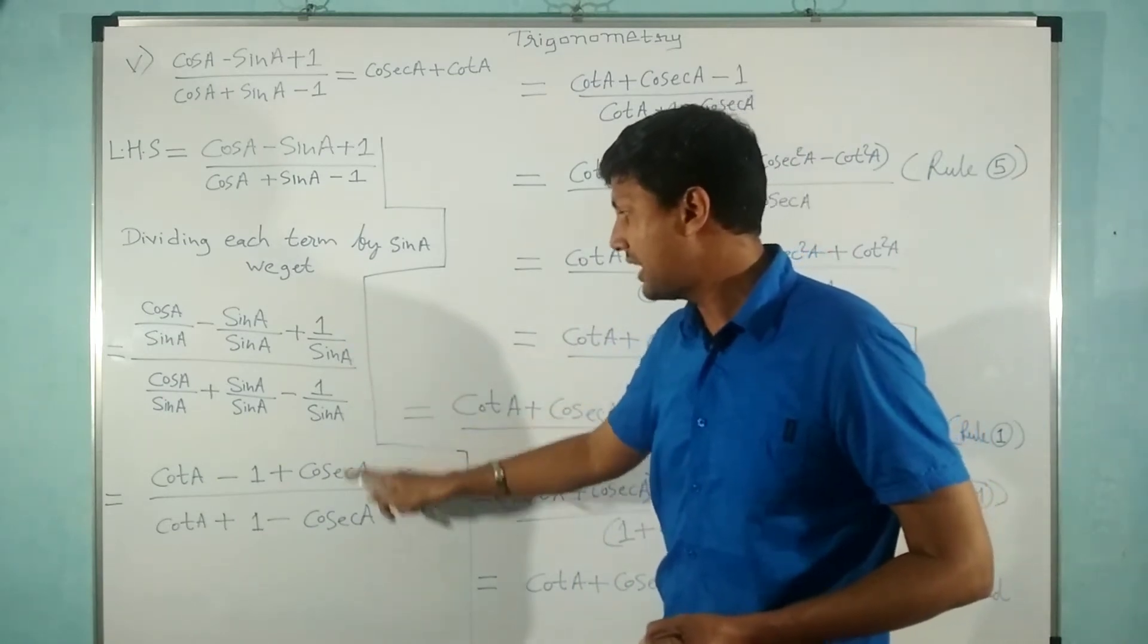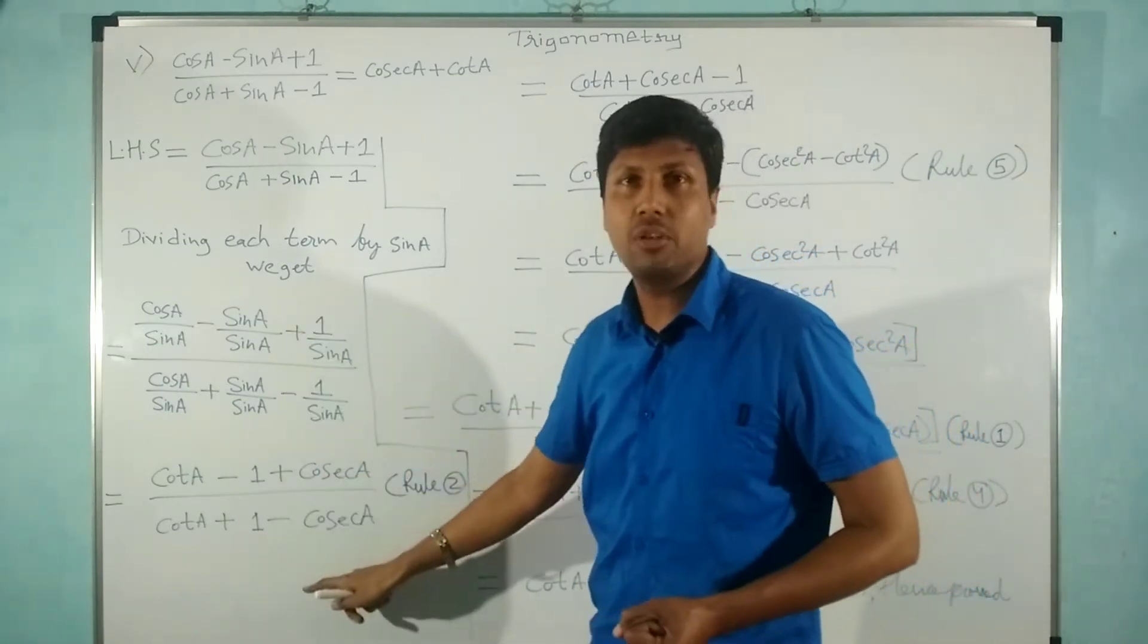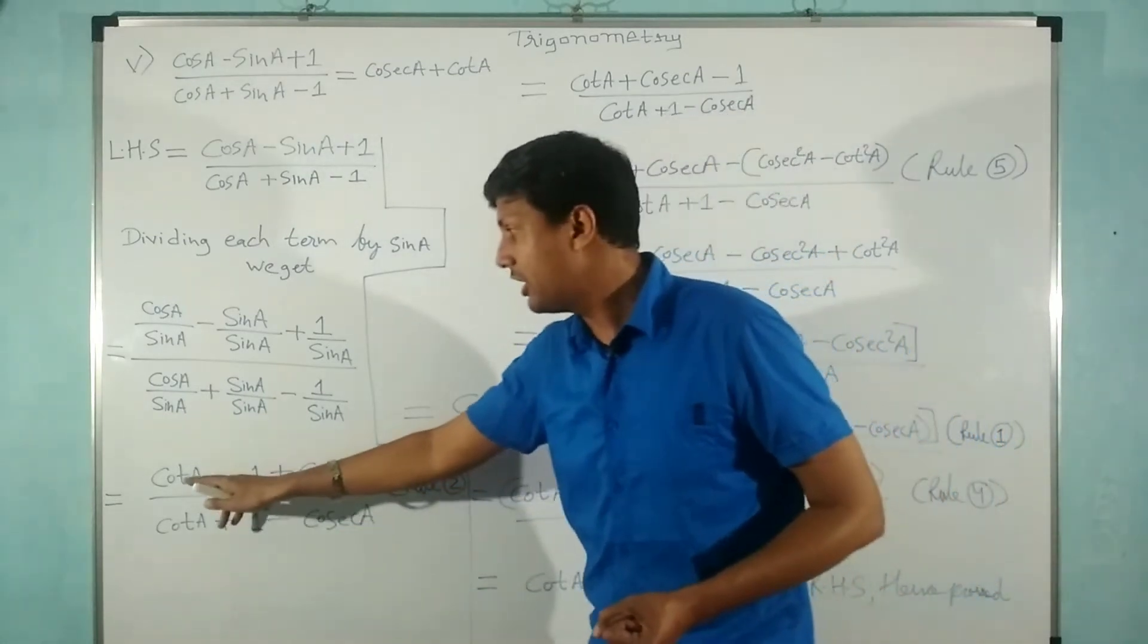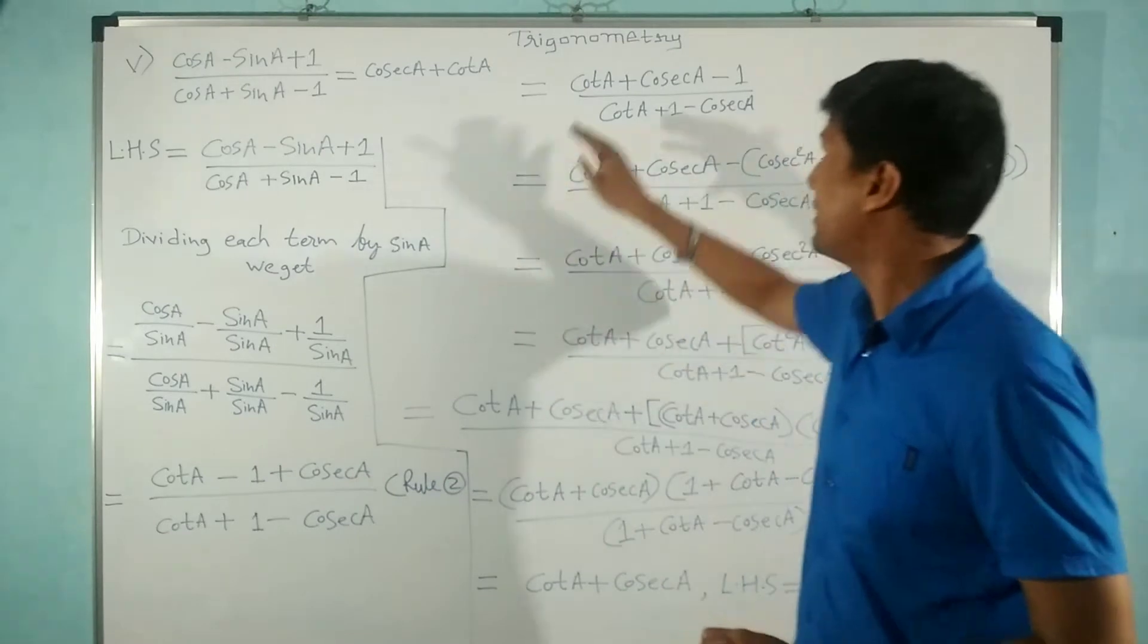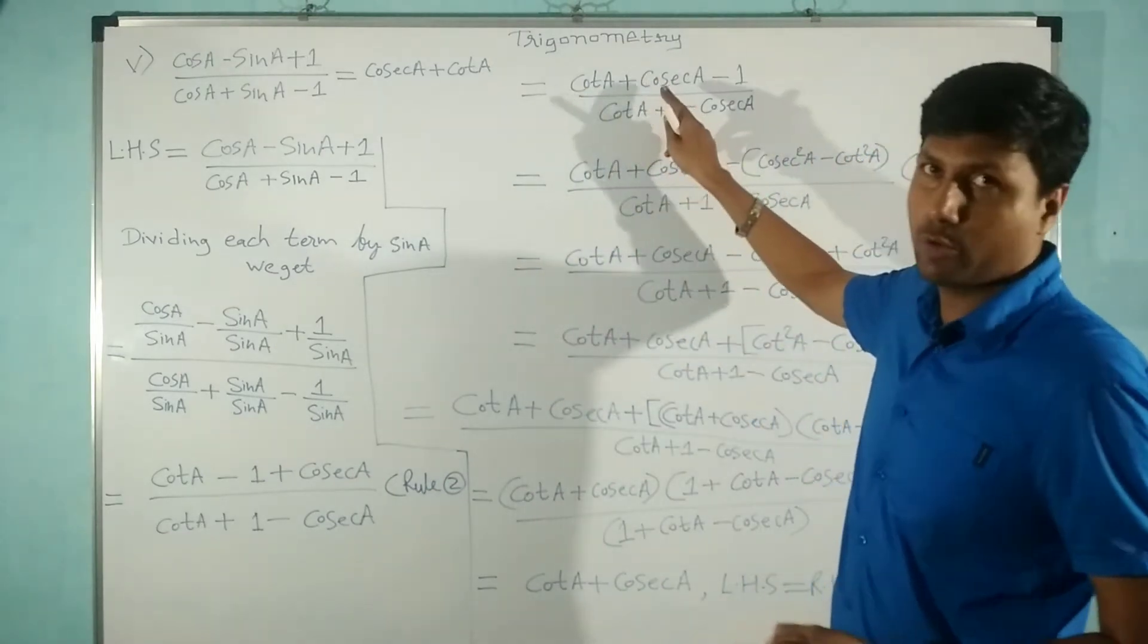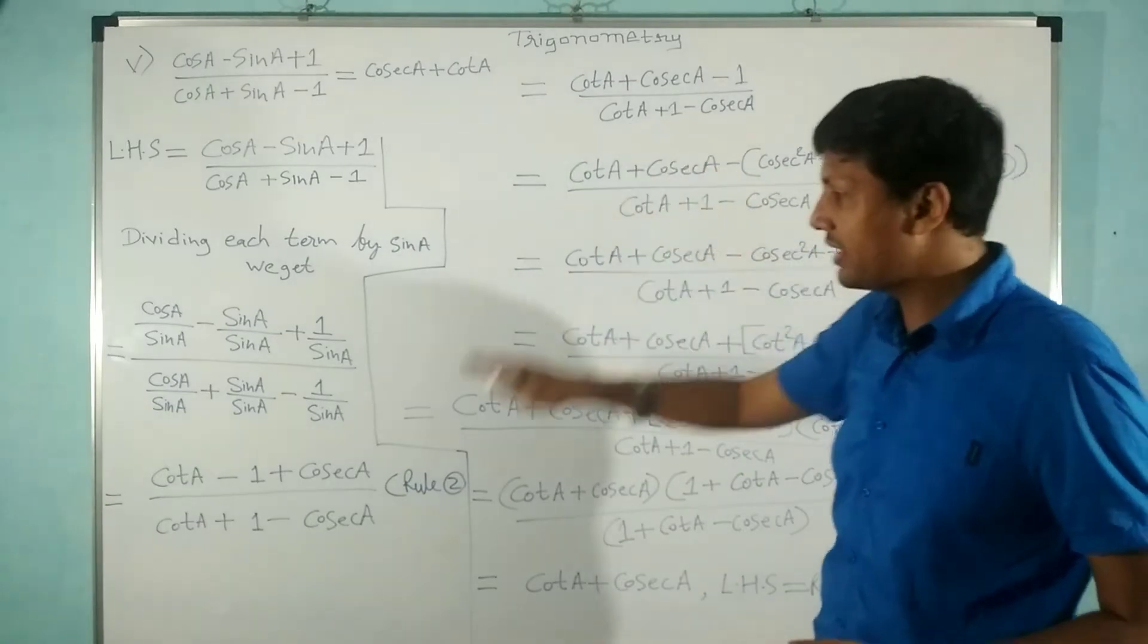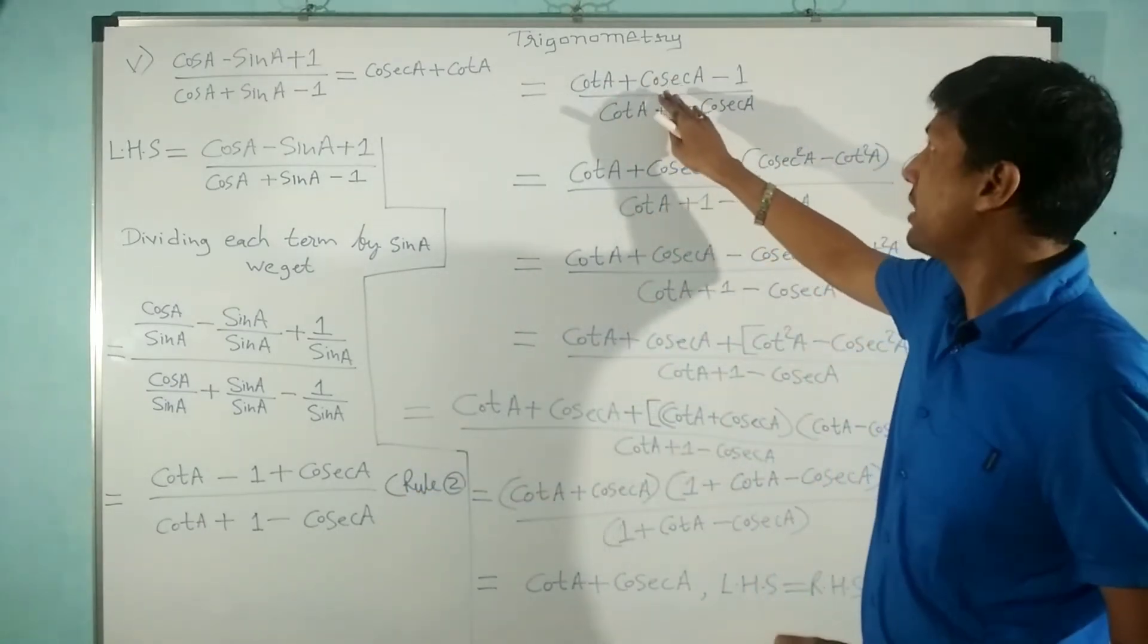Now what did I do? I just used commutativity in the numerator for cot A and cosec A. I took cot A and cosec A together. The denominator is exactly the same; in the numerator I just used commutativity to take these two terms together.